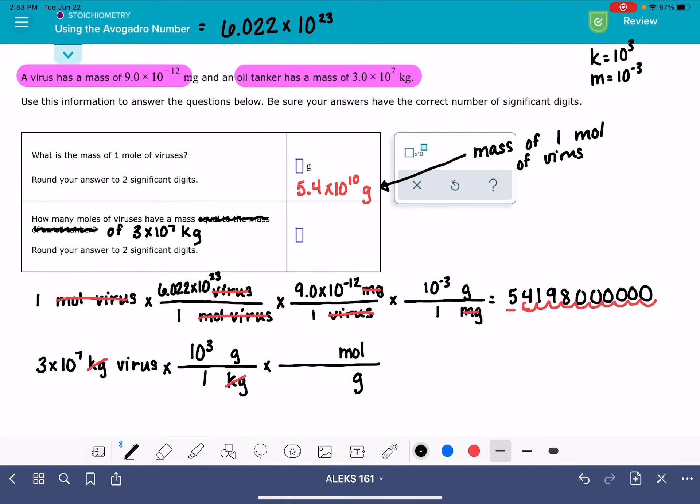I said that one mole, I calculated that one mole has a mass of 5.4 times 10 to the 10 grams, and that's going to cancel out my gram unit. And then I'm ready to just do my math.